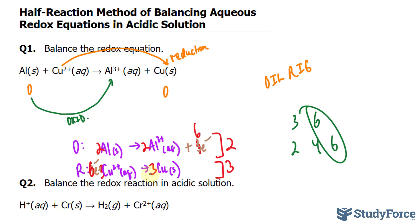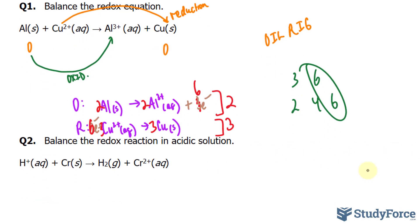Step 6 involves adding the two half-reactions together and canceling electrons and other species as necessary. I'll show my work over here. So since we have a 6 in the products here and 6 electrons in the reactants here, they can cancel out. Otherwise, we end up with 2 aluminum plus the reactants here. We had 3 copper 2+.